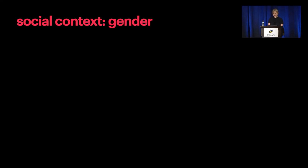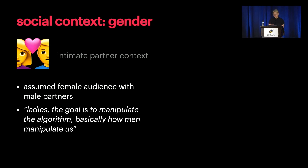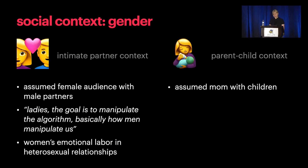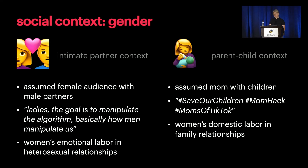Gender was also a notable part of the social context of our dataset. Videos in the intimate partner context assumed a female audience with a male partner—for example, 'ladies, the goal is to manipulate the algorithm, basically how men manipulate us'—which could speak to the expectation that women do emotional labor in heterosexual relationships. In the parent-child context, videos spoke to moms with children and used hashtags like 'saveourchildren,' 'momhack,' and 'moms of TikTok,' which could speak to the expectation that women do most of the domestic labor and parenting of children.